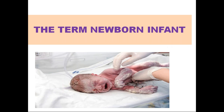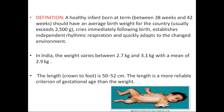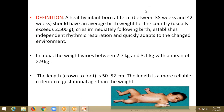Today's topic is term newborn. Coming to definition, a healthy infant born at term — that is 38 weeks to 42 weeks — should have an average birth weight. Usually it is more than 2.5 kg, though it varies from country to country. The infant, immediately following birth, establishes independent rhythmic respiration and quickly adapts to the changed environment. This is the healthy term newborn. If it fits everything in this definition, then we call it a healthy term newborn.